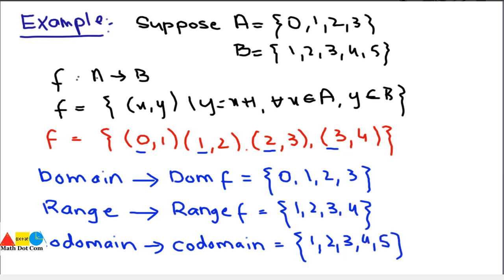Now check the elements of range and co-domain. There is one element more in co-domain as compared to range. This means range is the subset of co-domain. This is how range and co-domain are differentiated from each other. Hope the concept of domain, range and co-domain is cleared by using this example. Keep in mind that co-domain always includes all elements of set B, and range is basically the subset of co-domain.